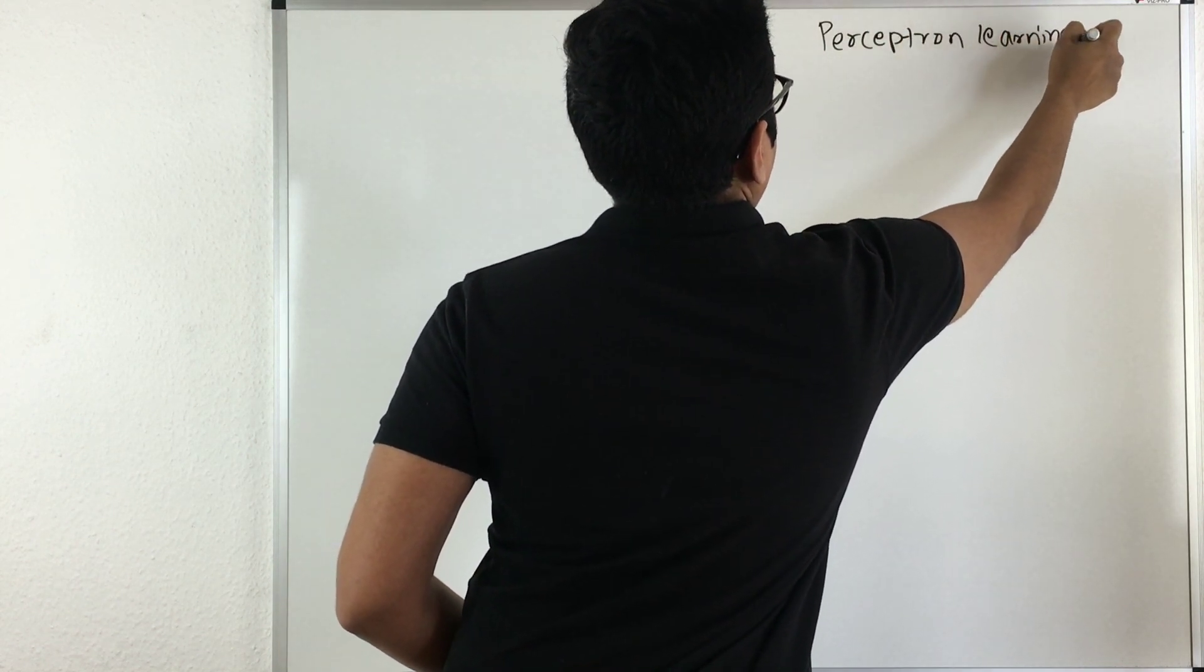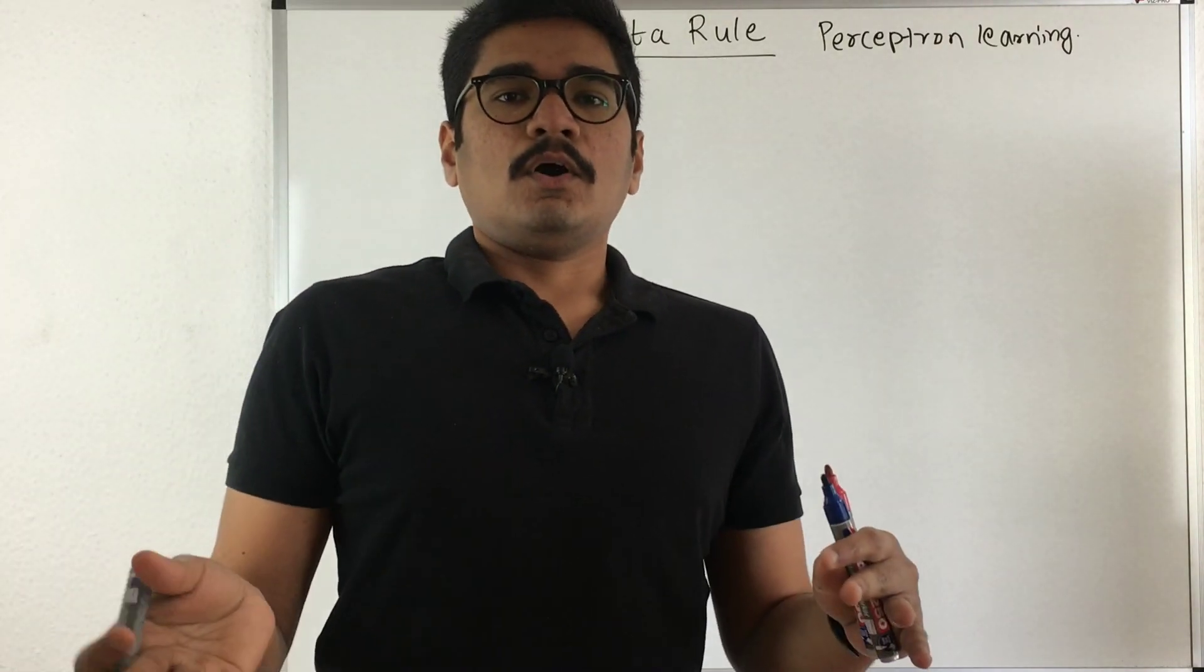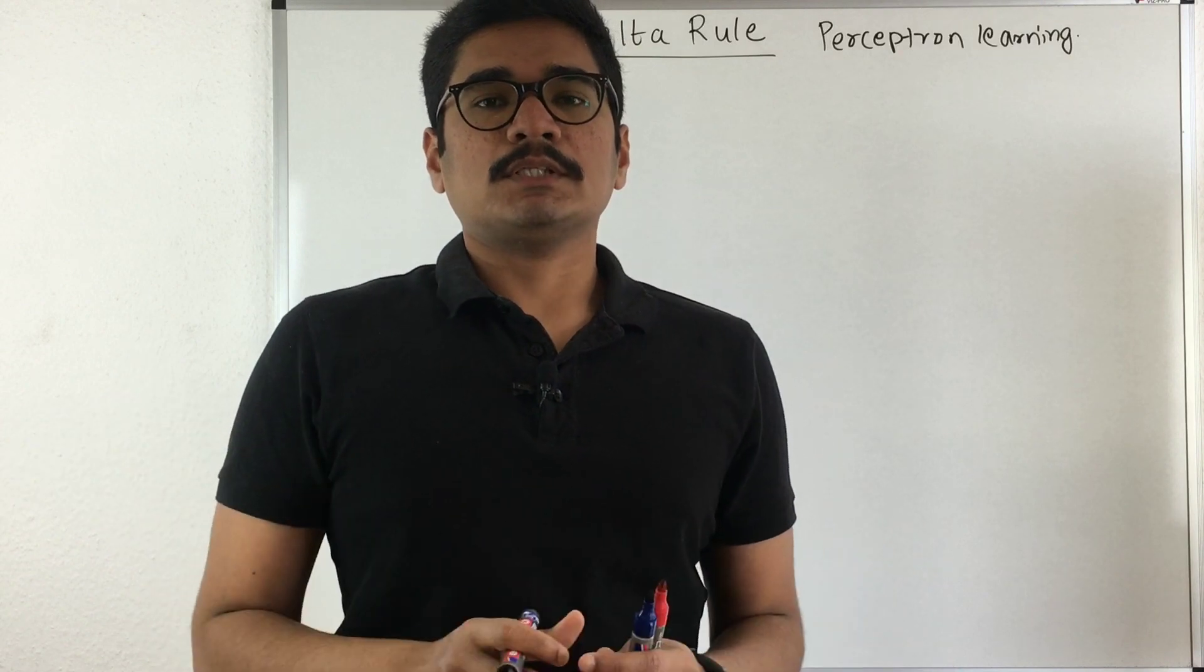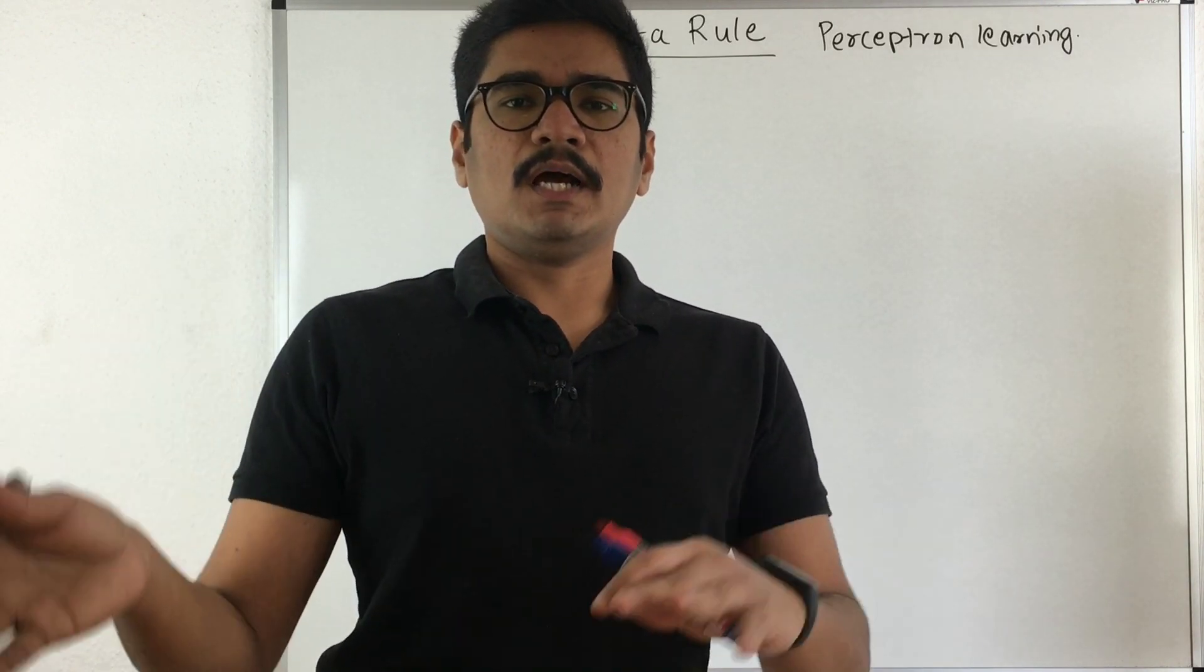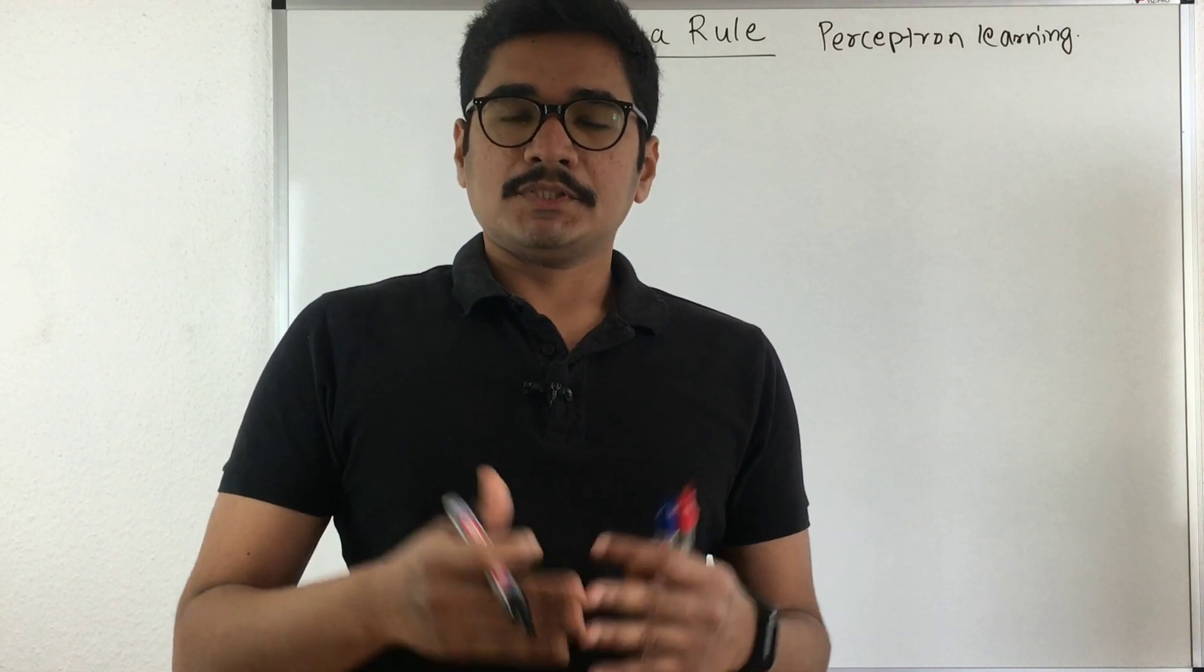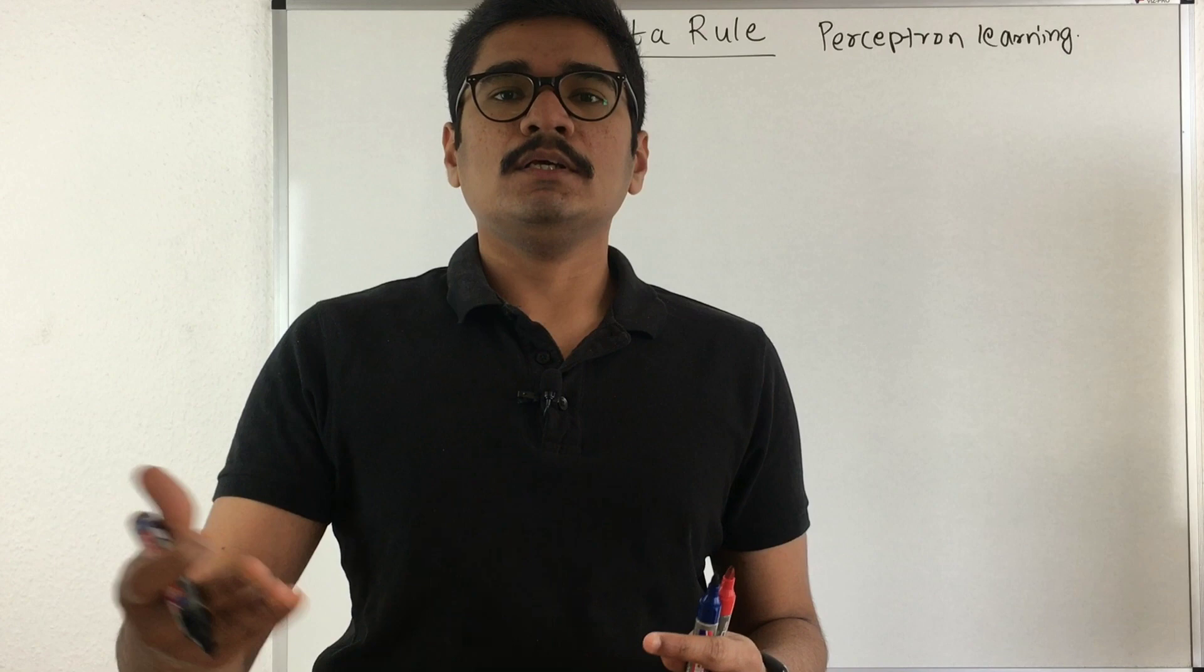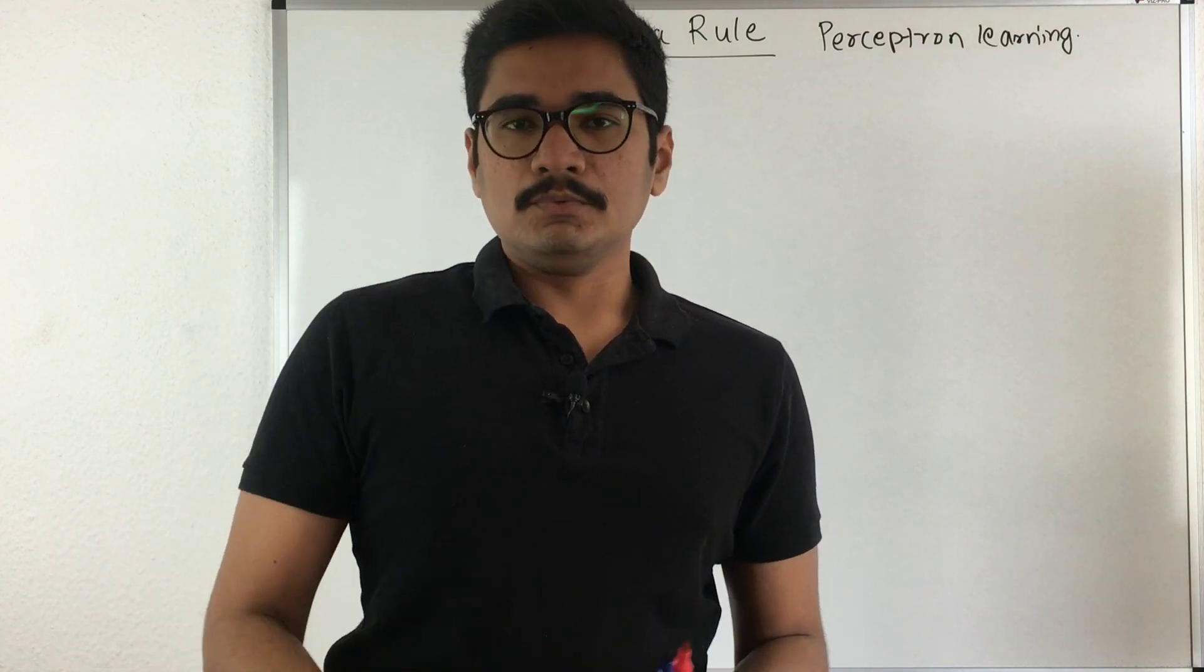In the very first video regarding deep learning, we have seen that we have two kinds of neurons or two kinds of neural network structure. One that is MCP and we disregarded it because it does not represent the XOR implementation or the XOR gate. And then we have the perceptron, that is the Rosenblatt perceptron that we majorly use.